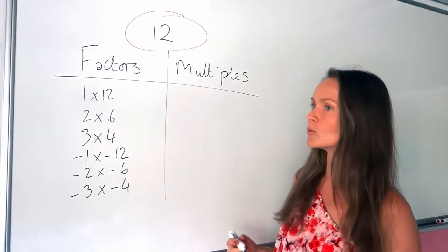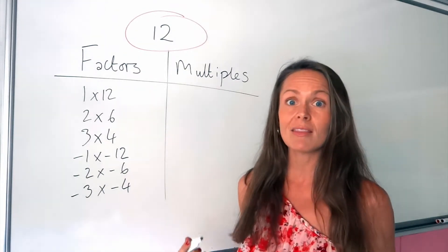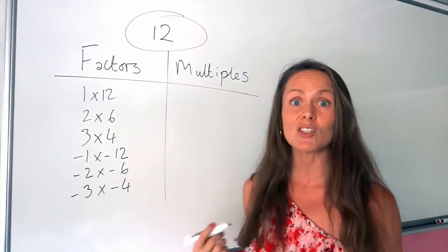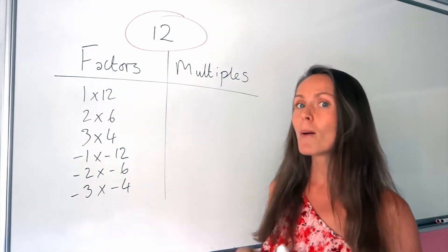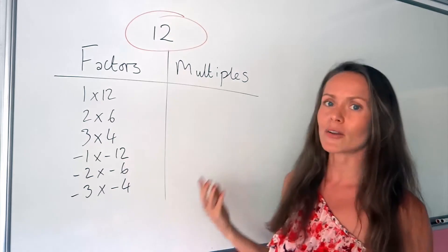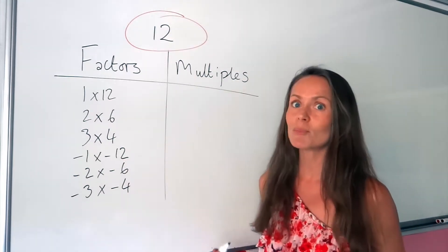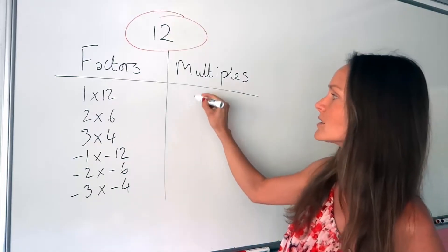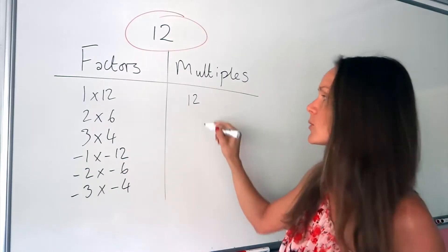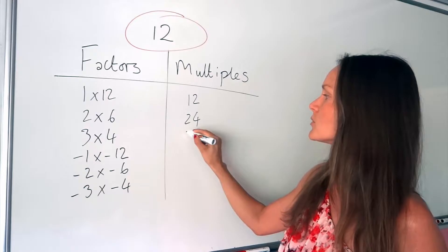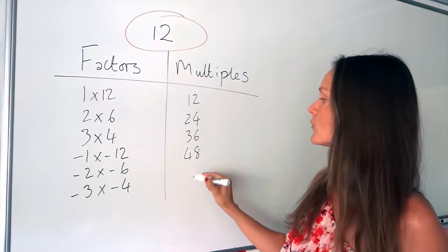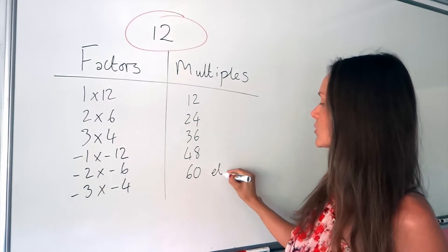Because multiples are the numbers that are in the 12 times table. So you're multiplying to find the multiples. So if I write out the numbers in the 12 times table: 1 times 12 is 12, 2 times 12 is 24, 3 times 12 is 36, 4 times 12, 5 times 12, etc.